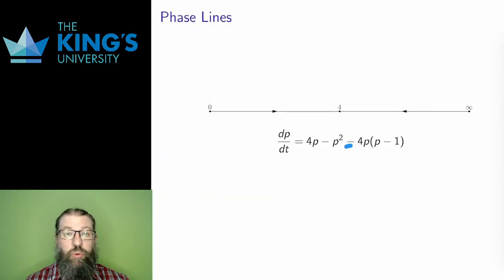Here's one more example with steady states of zero and four. Testing at P equals two gives a positive trajectory, and testing at P equals five gives a negative trajectory. Between zero and four, the population grows towards the steady state. And starting above four, the population decays back down to the steady state.